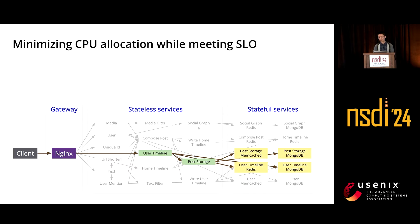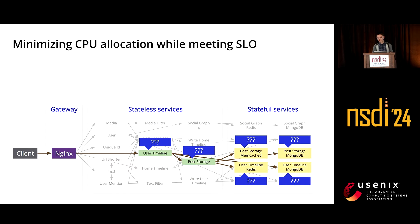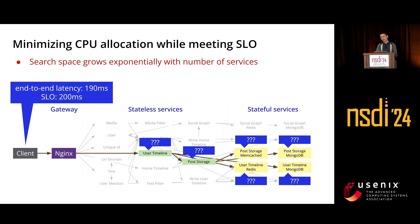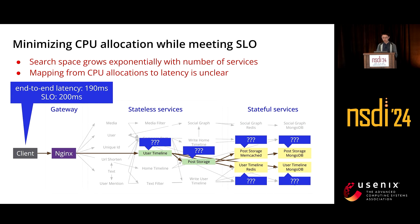The problem is: how do we allocate the right amount of CPU? For each service, we want to individually set its CPU allocation so we can set different amounts for different services, and use the minimum total CPU allocation to achieve the SLO. This problem is difficult mainly because each service requires a different allocation at each time step, so the search space grows exponentially with the number of services. Also, the mapping from CPU allocations to end-to-end latency is unclear, as different APIs have different service dependencies.